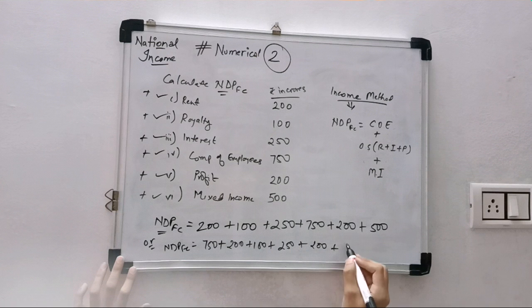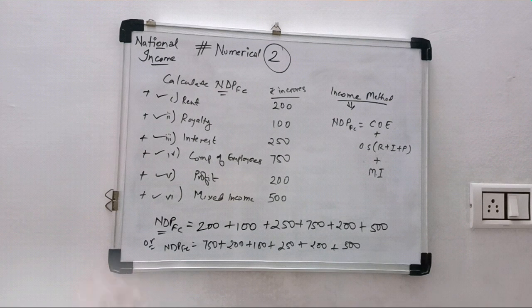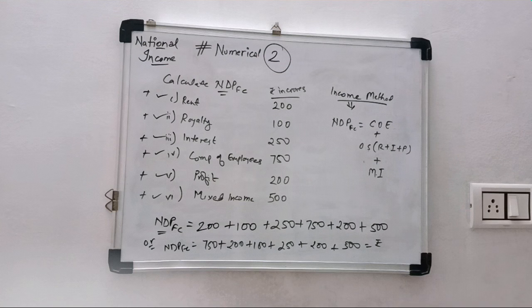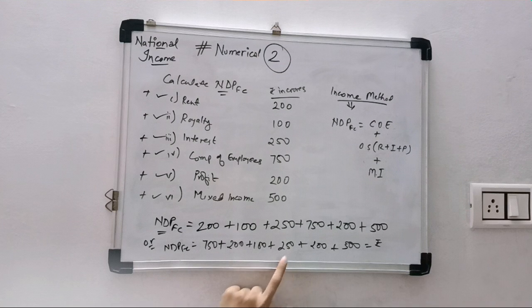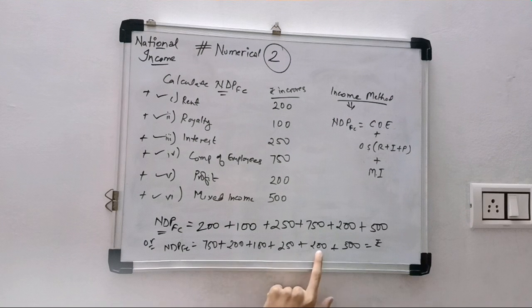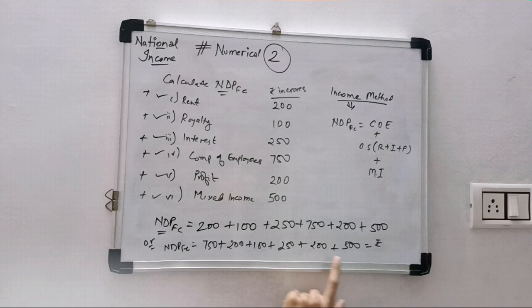And then last our mixed income 500. So the answer will be: 750 and 250 is 1000, 1200, 1300, 1500, and 2000.